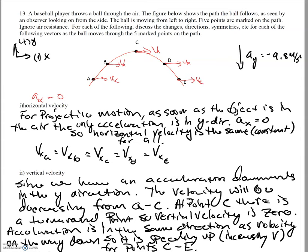For vertical velocity, we know that we have an acceleration in the y-direction. As soon as the object is in the air — no matter if we're going up or going down — the acceleration is the same. The acceleration due to gravity is always constant at 9.8 meters per second squared, and it is always pointing downwards. It doesn't matter if the ball is on the upward part of its trajectory or the downward part.